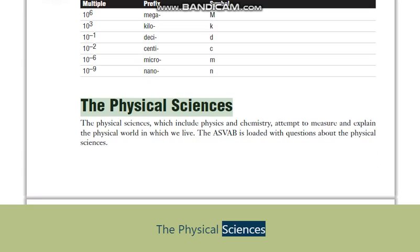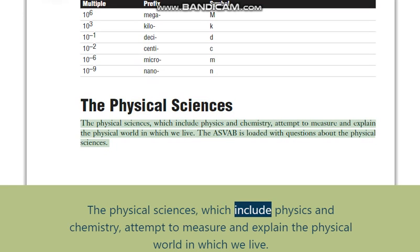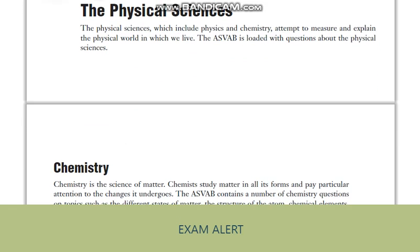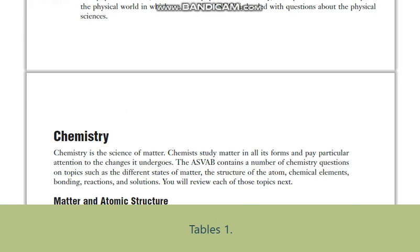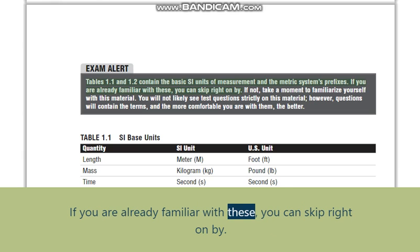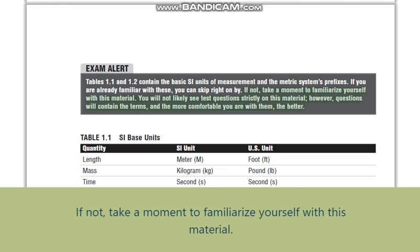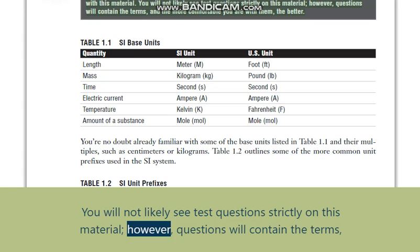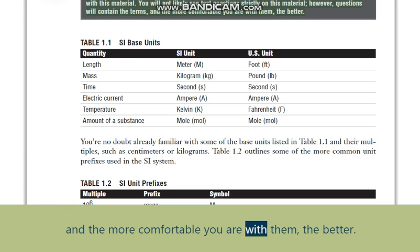The physical sciences, which include physics and chemistry, attempt to measure and explain the physical world in which we live. The ASVAB is loaded with questions about the physical sciences. Exam alert: Tables 1.1 and 1.2 contain the basic SI units of measurement and the metric system's prefixes. If you are already familiar with these, you can skip right on by. If not, take a moment to familiarize yourself with this material. You will not likely see test questions strictly on this material; however, questions will contain the terms, and the more comfortable you are with them, the better.